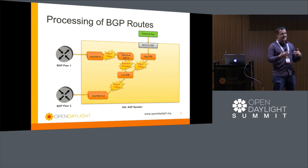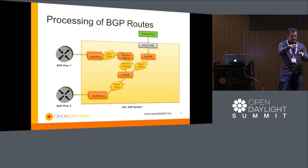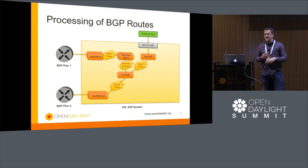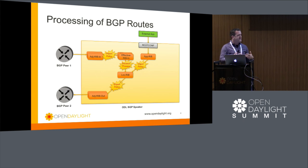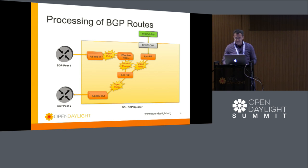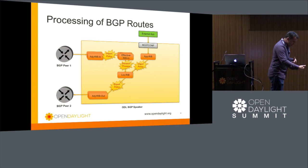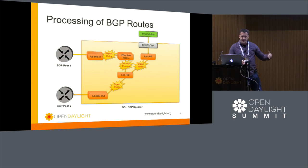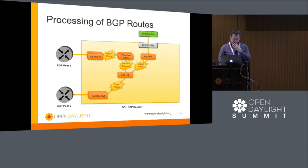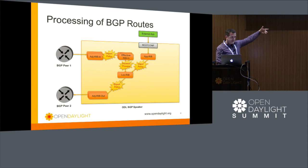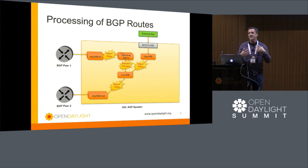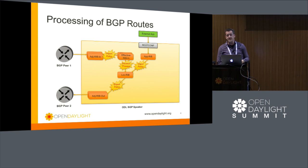Initially the application RIB was defined as an iBGP peer, but that caused issues where routes would never get reflected to other iBGP peers. We made it a special case more like a route reflector client — cluster IDs don't get added, but routes will make it to any iBGP peers. You can write an internal application that calls through REST conf, injects a route through the application RIB, and that makes its way into the loc-RIB. There are also internal Java APIs you can call for better performance.